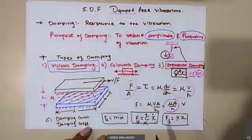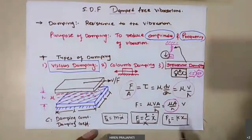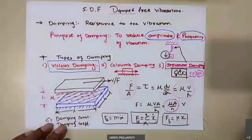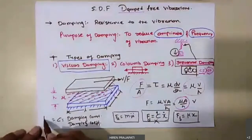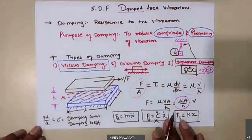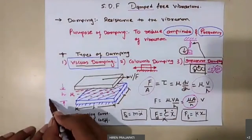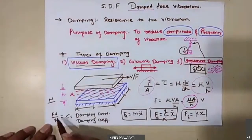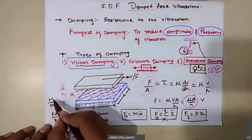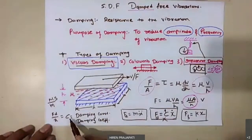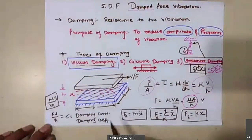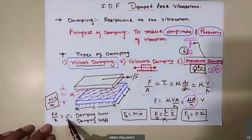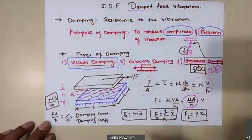If damping constant or damping coefficient is higher, then there is more reduction in amplitude per cycle of any vibrating system. The unit of damping coefficient: Fd equals C times x̊, so C equals Fd divided by velocity. The unit of Fd is Newton and unit of x̊ is meters per second. Therefore, the unit of damping constant is Newton-seconds per meter (N·s/m).